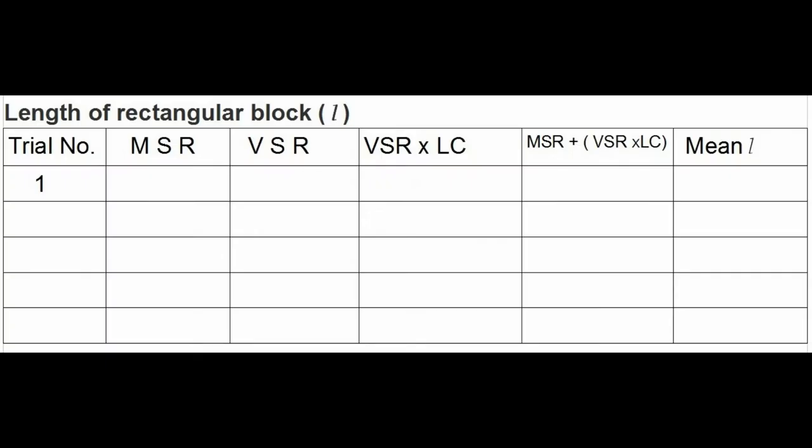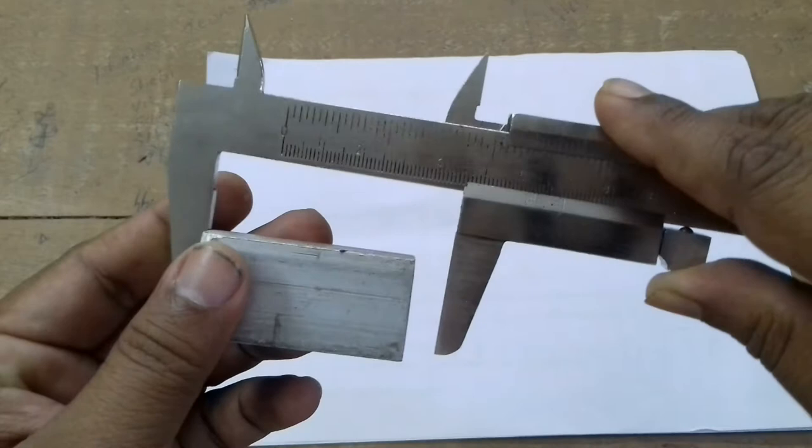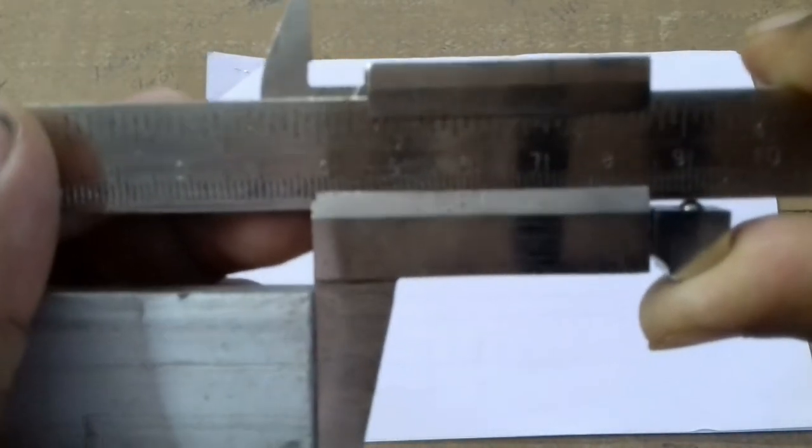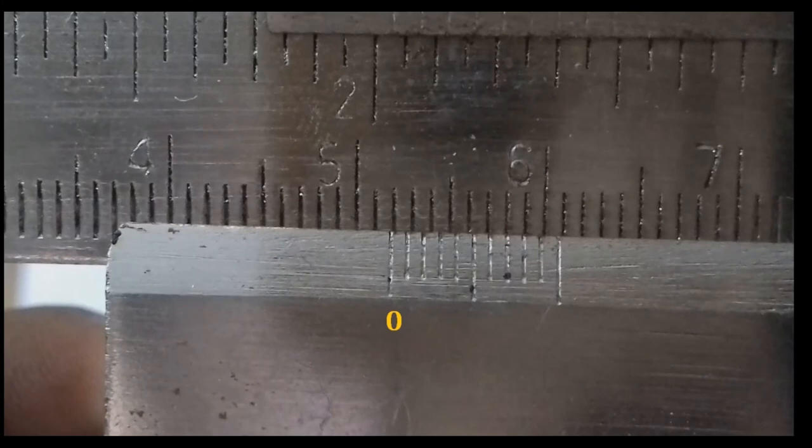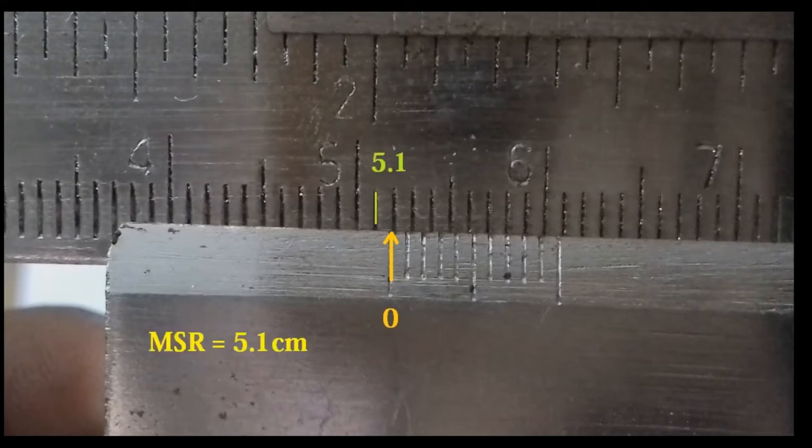We start with measuring length of the rectangular block. We need to measure MSR and VSR. To write down the readings, prepare a tabular column. We place the length side in between the outside caliper jaws tightly. To measure MSR, consider 0 of the Vernier scale as a pointer. Note on the main scale reading just before that pointer. It is noted as MSR. In this case, MSR value is 5.1.